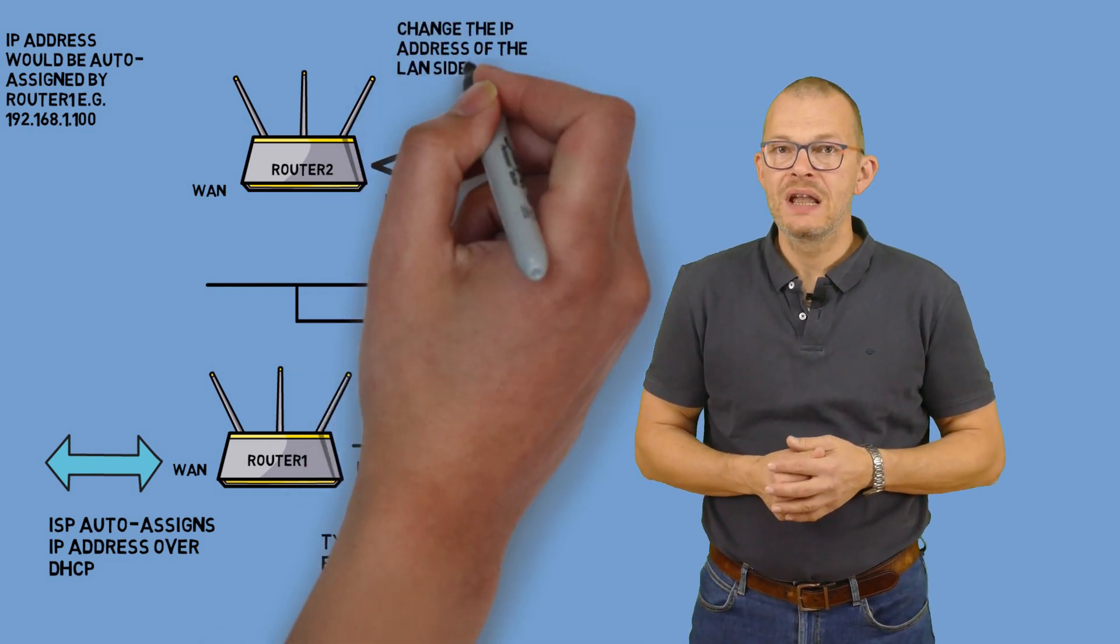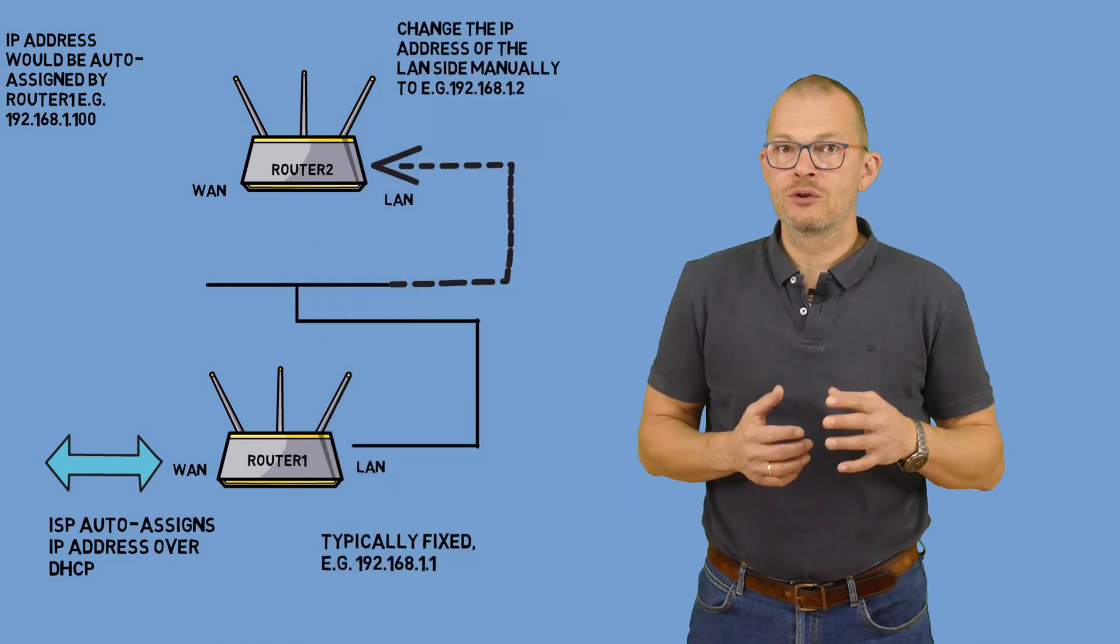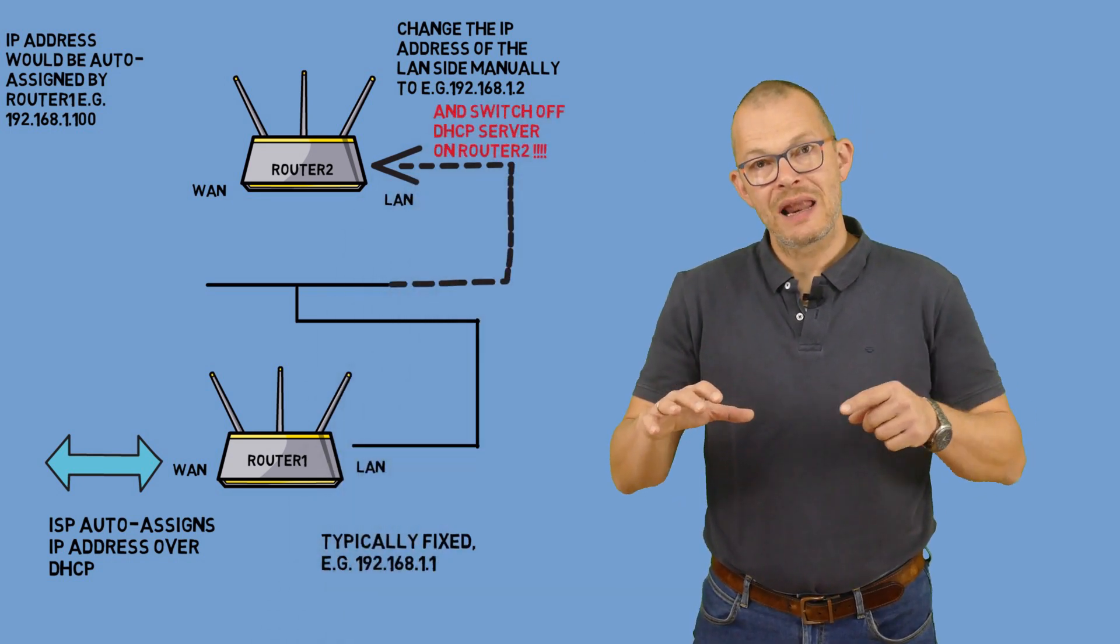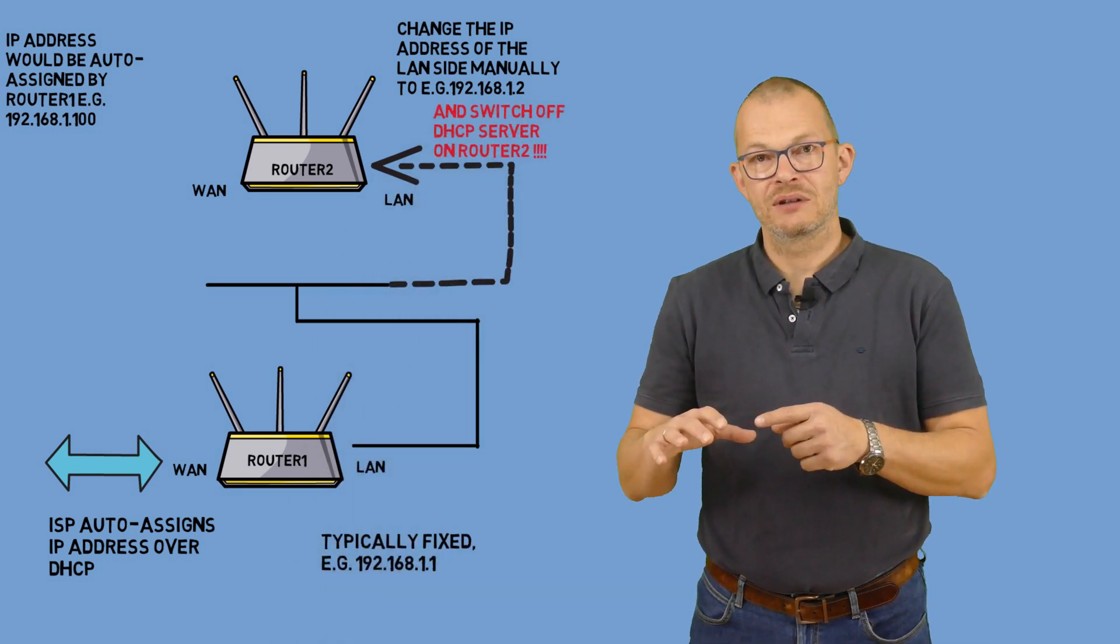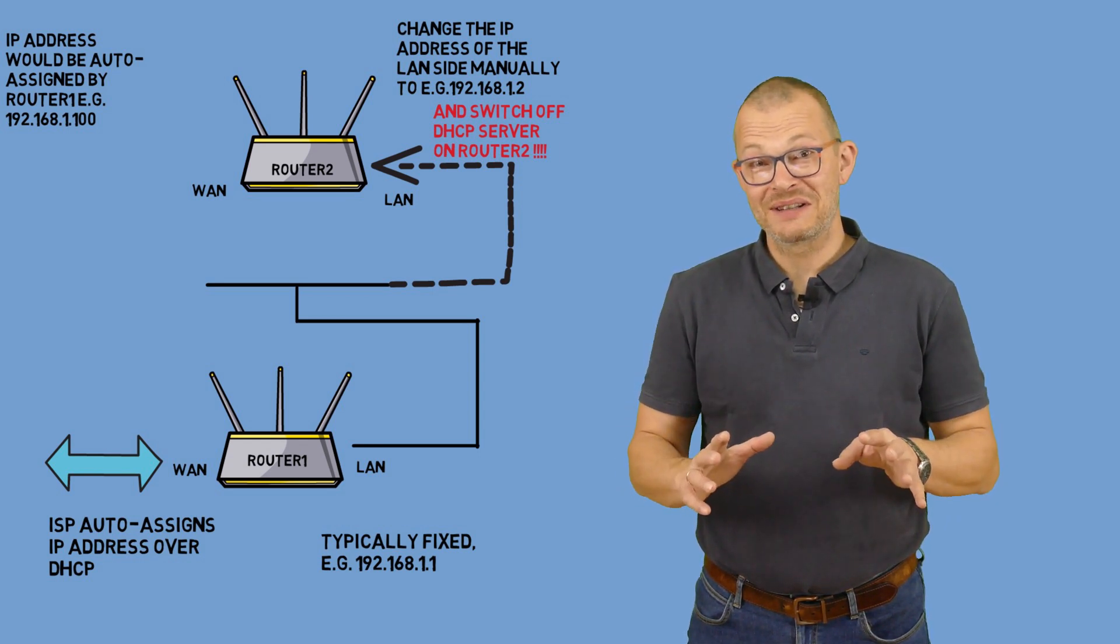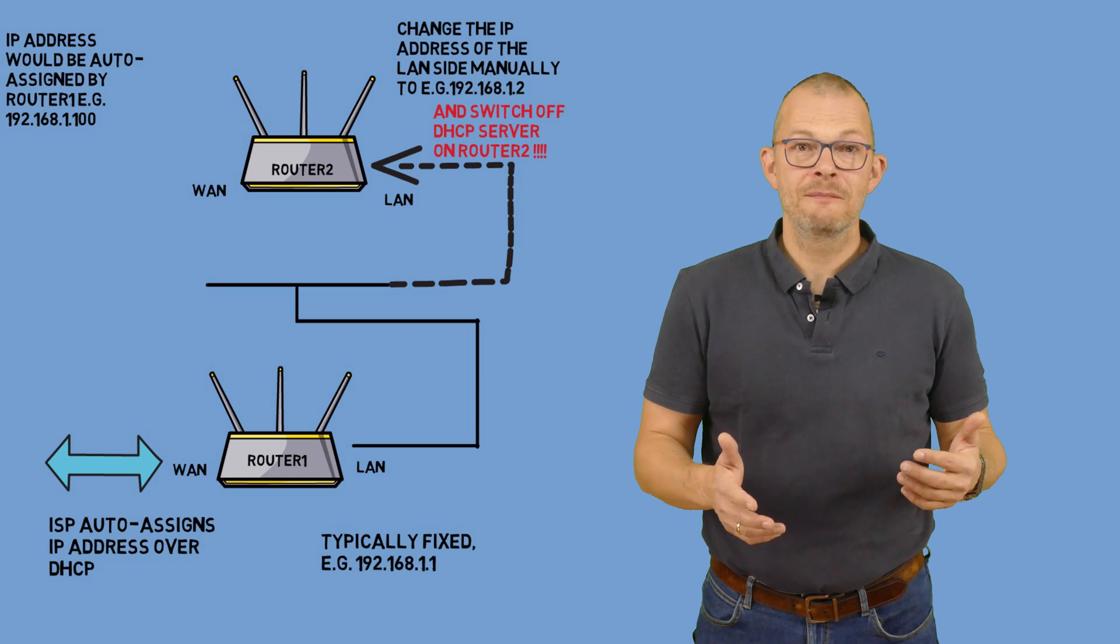Well, in theory it could just be enough if you plugged the network cable into the LAN port of the second router rather than into the WAN port. But there is no guarantee. It depends on the vendor and the firmware etc. If you are using an open firmware such as OpenWRT you can configure this explicitly.